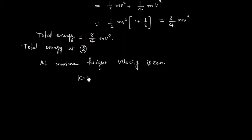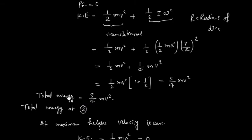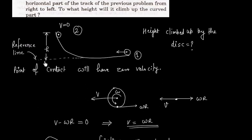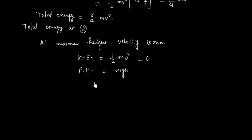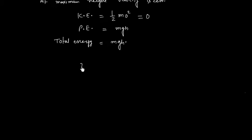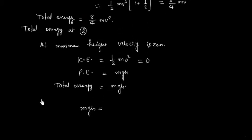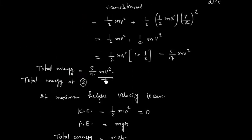So kinetic energy is zero. Potential energy is mgh because height from the reference is H. So we can equate these two energies. So total energy will become mgh. So now if I apply energy conservation, mgh is equal to 3 by 4 mv square.